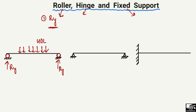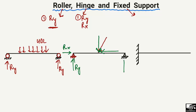The hinge support is always represented by a triangle. It can take both the vertical reaction and the horizontal reaction, so there are two reactions this type of support can provide. For example, if there is an inclined load acting on the beam, it has one vertical component and one horizontal component. This support can take the horizontal load R_X and also the vertical load R_Y. These types of supports are used where we have to resist both horizontal and vertical forces.